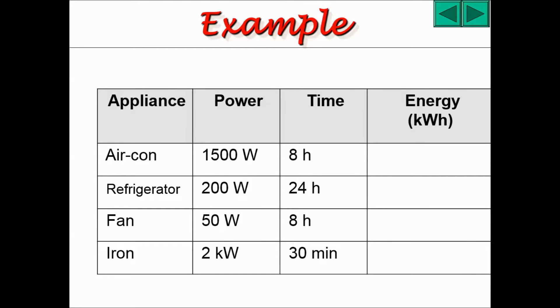Some examples. Please try out these practices on your own first before checking the answers. So, these are the answers. You will see that if the power is in watts, you need to convert it to kilowatts. 1500 watts would be equivalent to 1.5 kilowatts. 8 hours remains the same. Therefore, that gets you 12 kilowatt hours of energy for the aircon.